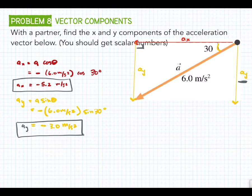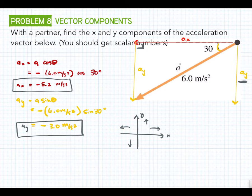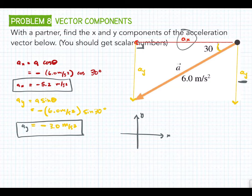We're just thinking of a regular x-y axis: this direction and this direction are positive; this direction and this direction are negative. Visually, is there a way to check if your answer makes sense? If you draw out this triangle, which component is longer? The x one — ax. So if you mixed up sine and cosine and got 3 for x and 5 for y, it wouldn't match what you see. That's what I mean by guessing which one's going to be bigger first — when you get your answer, you know if you made a trig error.